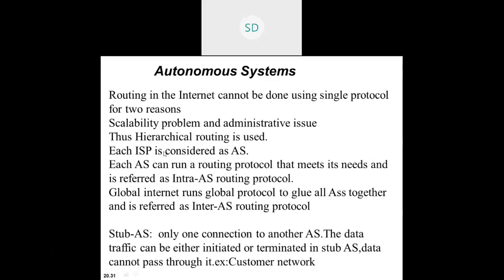There are different systems, the first being the autonomous system. Routing in the internet cannot be done using a single protocol for two reasons: scalability and administrative issues. The number of users at a particular location or provider may vary. Administratively, some customers may only access certain features — some use only data, others use calling — so a single protocol cannot serve all needs.